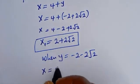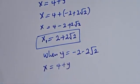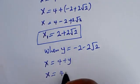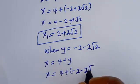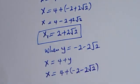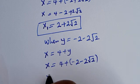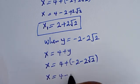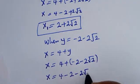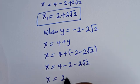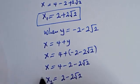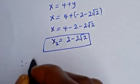Using equation 3, x is equal to 4 plus y. For y2 equals minus 2 minus 2 root 2, we get x equals 4 plus (minus 2 minus 2 root 2), which simplifies to 4 minus 2 minus 2 root 2, giving x2 is equal to 2 minus 2 root 2.